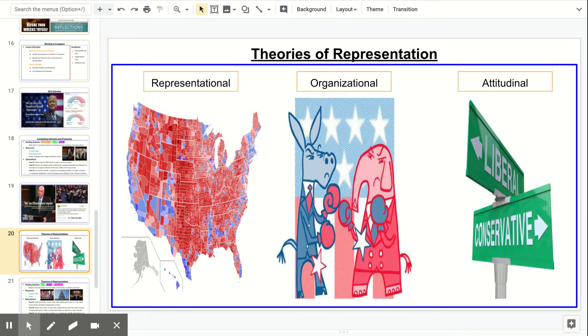Alright, so for the next activity, you guys are going to look at three of the main theories of representation. So basically, when you take a look at that McCain example, it's kind of like, why did this guy ultimately end up acting the way he did when he was part of the Republican Party who for years wanted to get rid of the Affordable Care Act? So it can be tough to kind of predict the behavior.